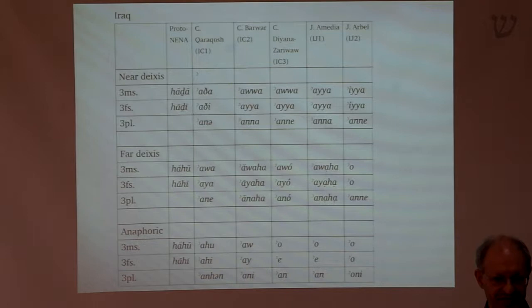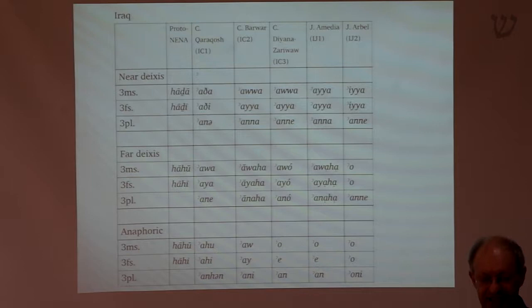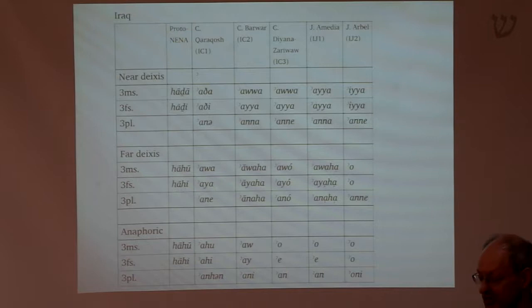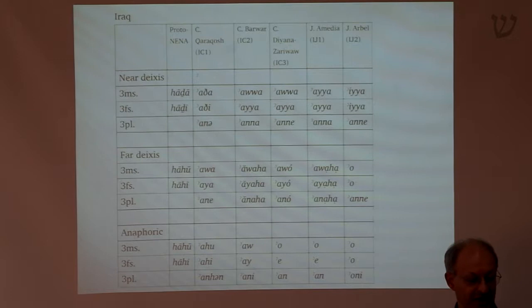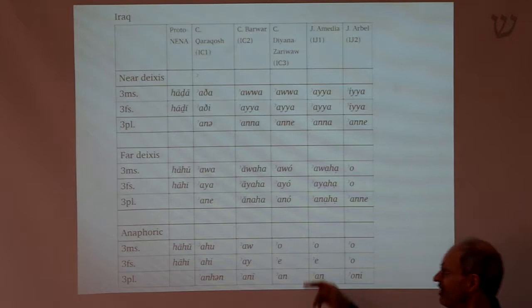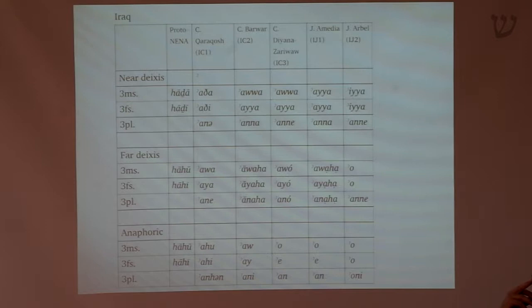Anaphoric means a pronoun referring to some referent which has been mentioned previously but is not in the speech environment — I can't point to it. If I've just been talking about a friend of mine who is not here but I've just been talking about him, I would use 'awa' — he is absent from the speech situation, but I'm referring back to him in the discourse. That's called anaphoric. So you have those three types of pronoun in many NENA dialects.